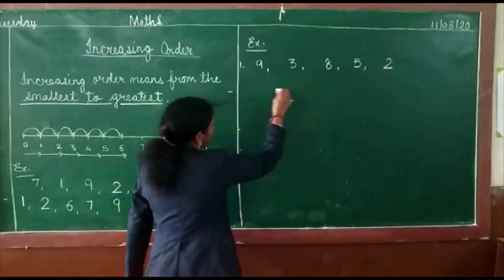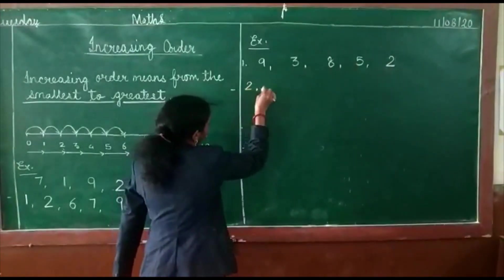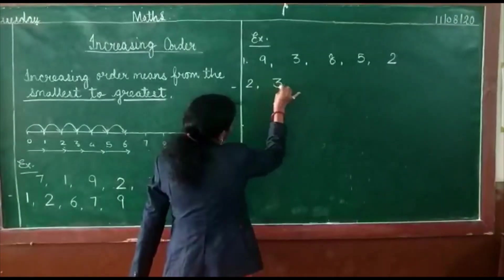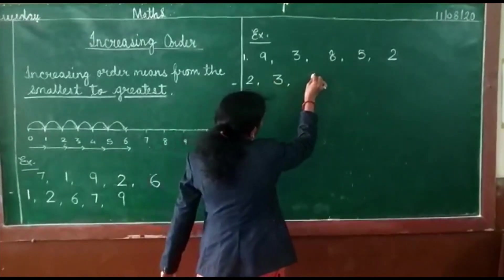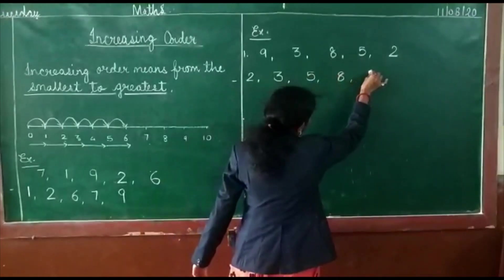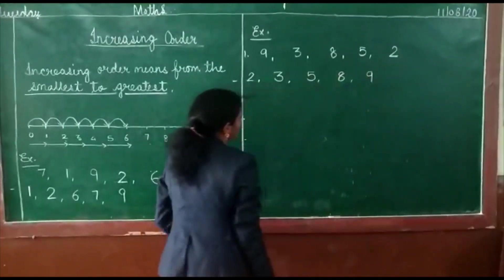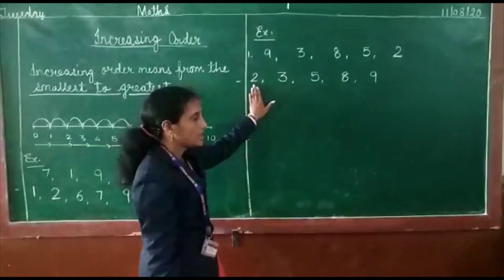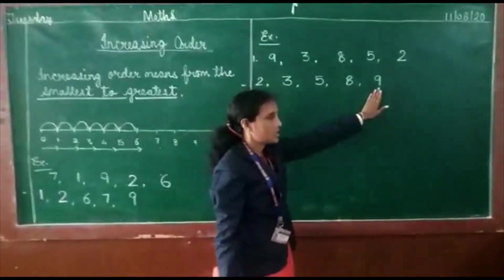Smallest number is here. Two, then three, five, eight, nine. Chote number se start karke hum bade number ki taraf ja rahe hai.